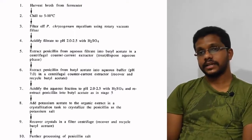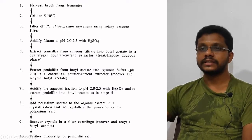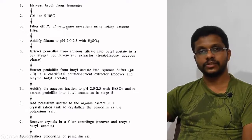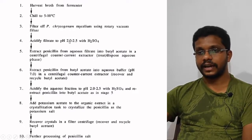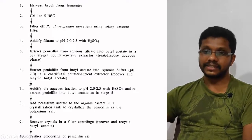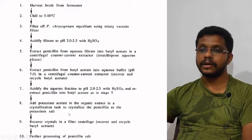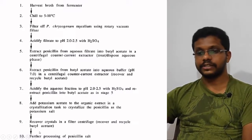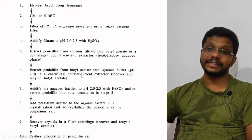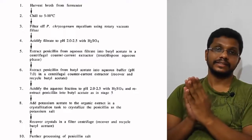In this way, different products can be separated. In summary: harvest the broth, chill it, filter out the mycelium, adjust the filtrate pH to acidic range, extract into butyl acetate, adjust pH to 7 and extract into aqueous buffer, repeat the acidification and extractions, then add potassium acetate to crystallize the penicillin and recover the crystals for further processing. In downstream processing, we use different techniques, each of which will be addressed in separate seminars.